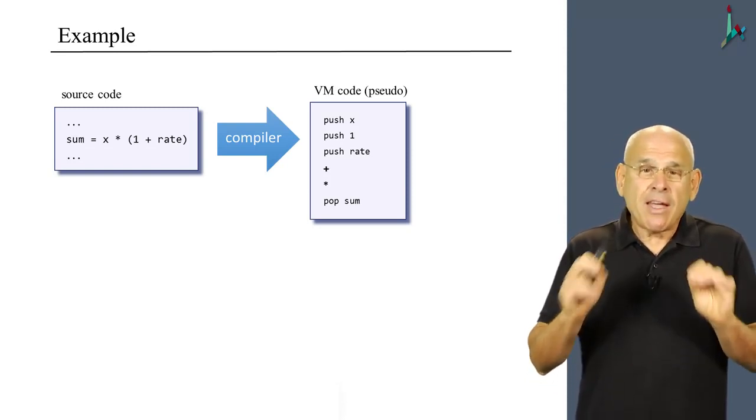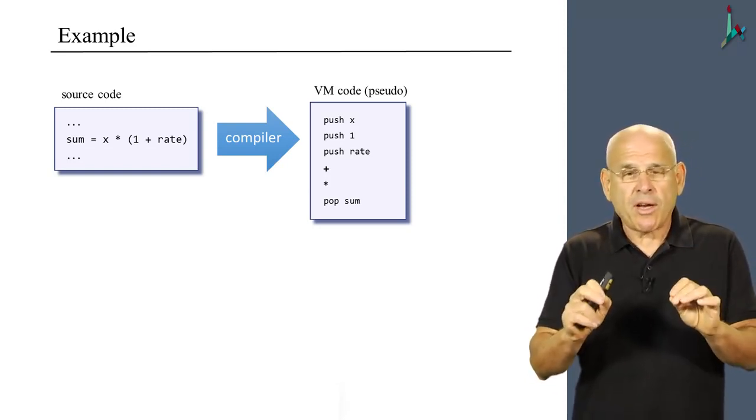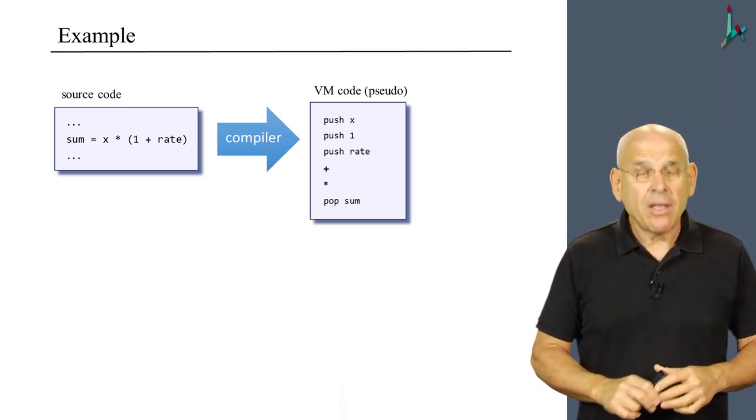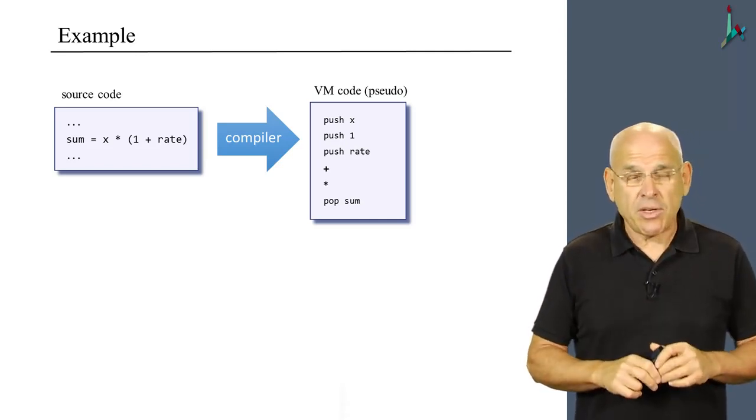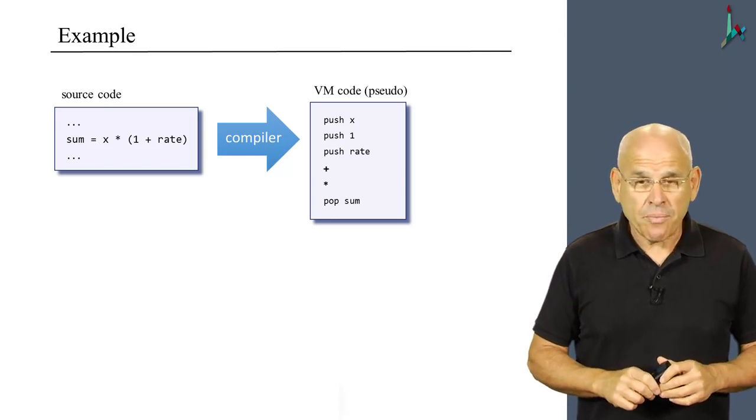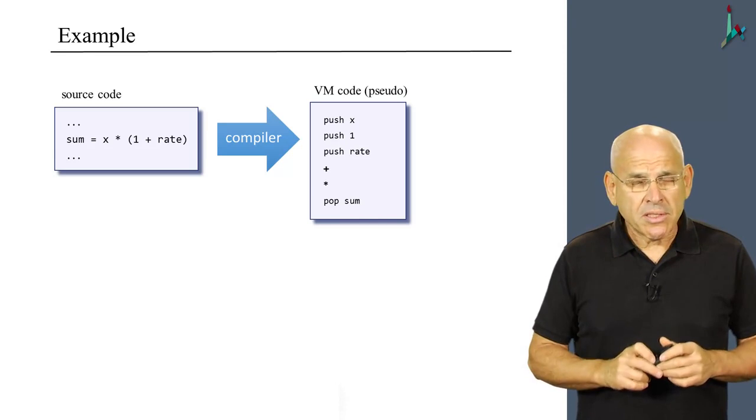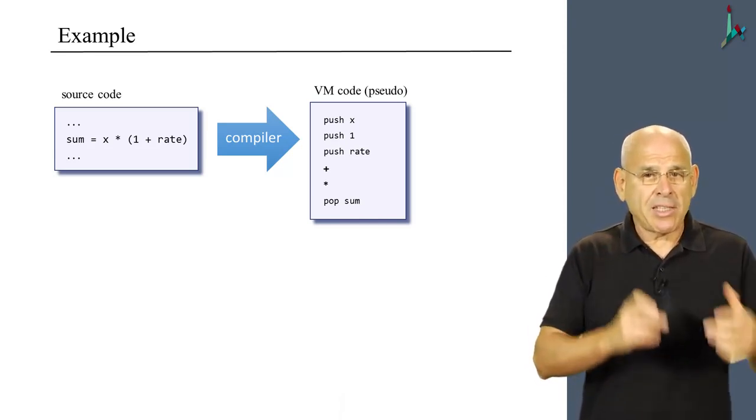And yet, we haven't yet discussed how the code generator is going to accomplish this magical transformation. This will be done in the next unit of this module. But for now, let us focus only on the variables. So once again, we have sum, x, and rate.